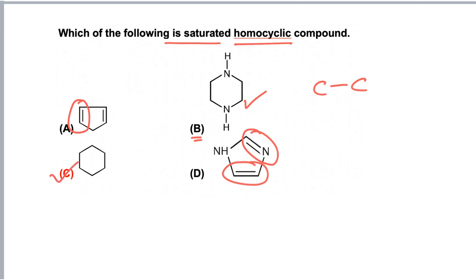While in option C, all the atoms present are having single bonds between carbon atoms, and all the atoms in the ring are identical and they are carbon. Hence, this molecule is homocyclic and saturated, and the correct option is C.